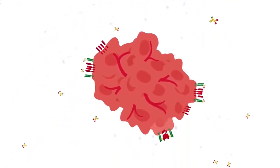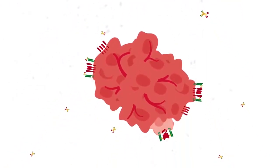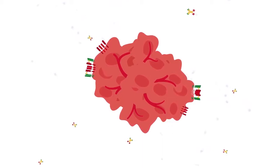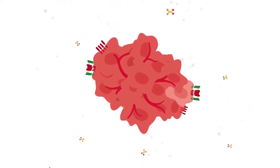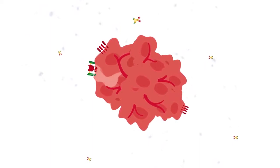Therefore, targeting the CDH17 anchor protein provides crucial specificity for the bispecific antibody and ensures that only the tumour cells are killed.